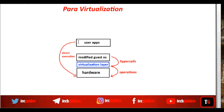This cannot be considered full virtualization because the operating system is not completely abstracted by the virtualization layer. The guest operating system is modified and hence the operating system is aware that it is running in a virtualized environment. In other words, we are seeking operating system assist for achieving virtualization, and hence it is called para-virtualization.